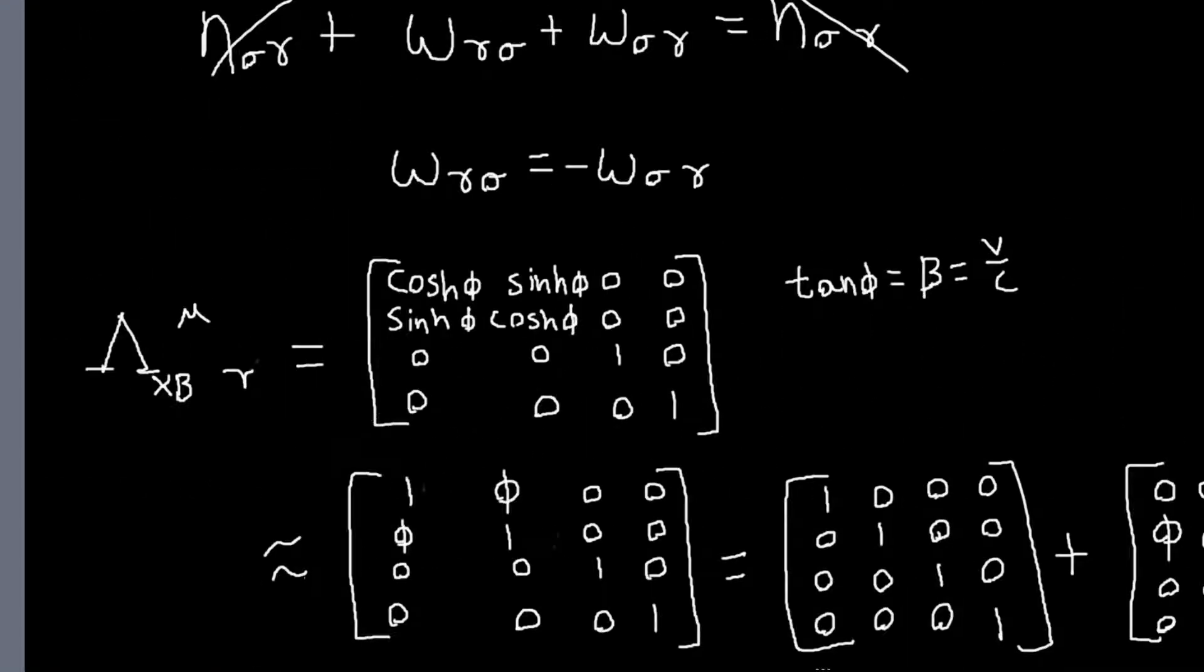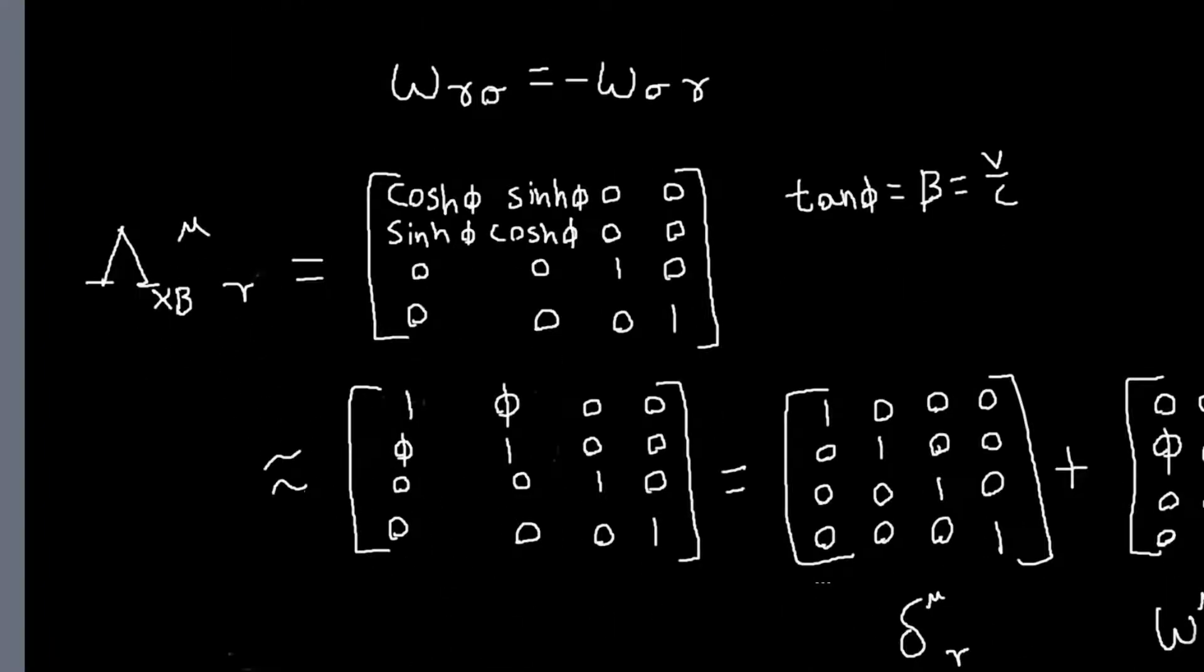But basically, yeah, so our usual transformations, the matrix forms that we're used to dealing with... are the forms with one... are the Lorentz transformations with one index raised and one lowered. That's what I'm trying to say.